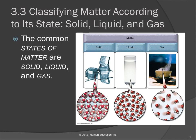Scientists like to classify things. Just like you could separate Legos into different categories — by color, by shape, or by size — scientists find it useful to classify things. So we classify matter, and one way to classify it is by its physical state. The three common states of matter are solid, liquid, and gas.